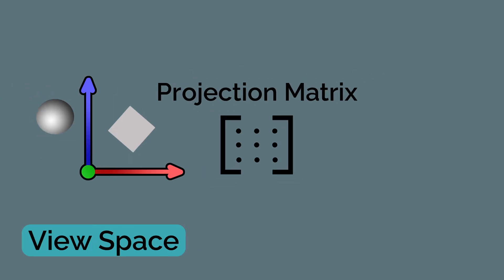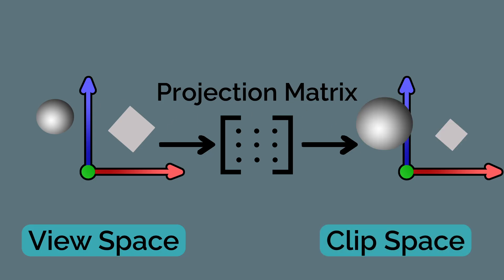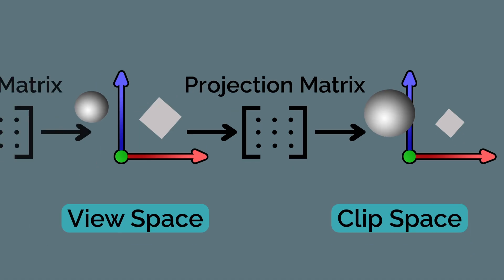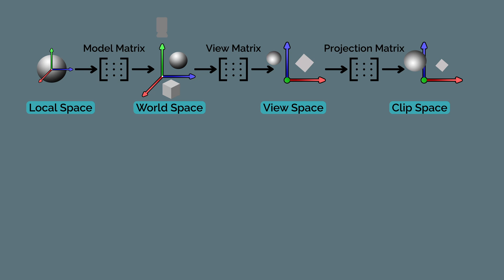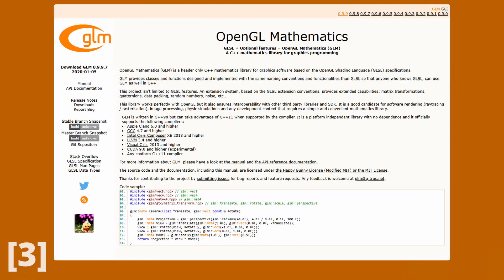A 3D scene has a camera that defines the position and direction we want to view the scene from. A view matrix is used to rotate and move the objects to arrange them as seen from the camera's point of view — the view space. Lastly, we have the projection matrix, which takes our three-dimensional coordinates and turns them into two-dimensional coordinates that can be displayed on our 2D screens, taking perspective into account and making objects further away appear smaller. We're going to use the library GLM, which gives us functions for creating the view and projection matrix.